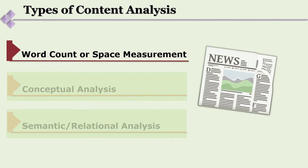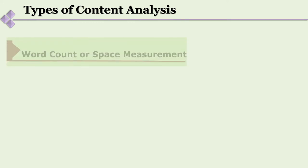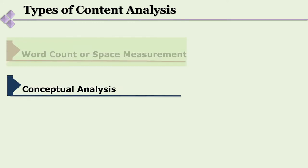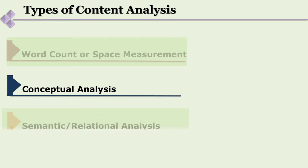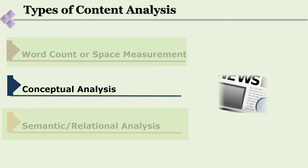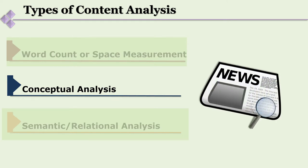In the context of newspapers, content analysis can show how newspapers give more space to particular kinds of news and less to others. Another type is conceptual analysis, where we examine the underlying concepts in a given text. There is also relational or semantic analysis — since semiology is the science of signs — where we look at how signs have been designed and examine them in their socio-cultural context.